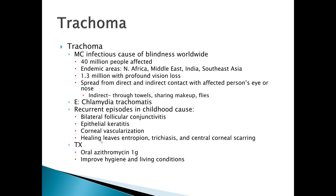Recurrent episodes in childhood can cause bilateral follicular conjunctivitis, epithelial keratitis, corneal vascularization, and healing can leave you with entropion which causes inturning of the eyelids, which then can lead to corneal scarring and trichiasis. Treatment is oral azithromycin one gram, and one of the other treatments is to improve hygiene and living conditions if at all possible.